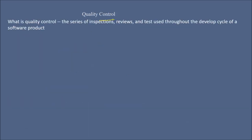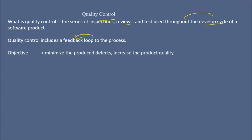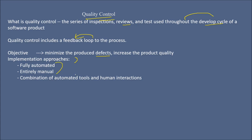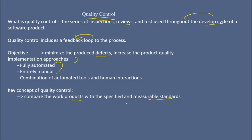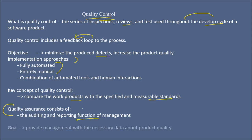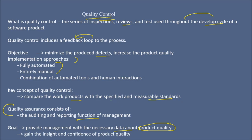Quality control consists of a series of inspections, reviews, and tests, which are employed throughout the development cycle for a software product. Quality control also includes a feedback loop to the process. The objective is always to minimize defects and in turn increase the product quality. It can be fully automated, entirely manual, or a combination of tools and human interactions. The key concept of quality control is comparing work products with specified and measurable standards. Quality assurance consists of the auditing and reporting function of management, with the goal of providing management with necessary data about product quality and gaining insight and confidence in product quality.